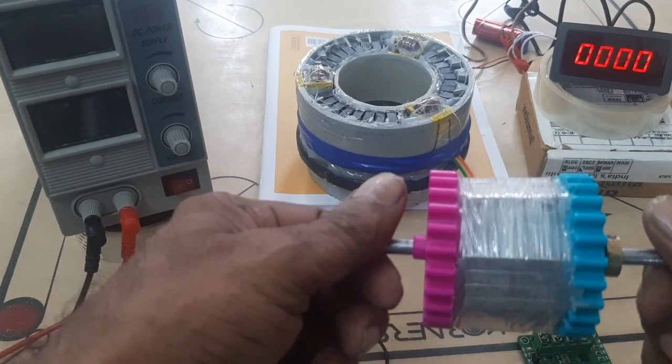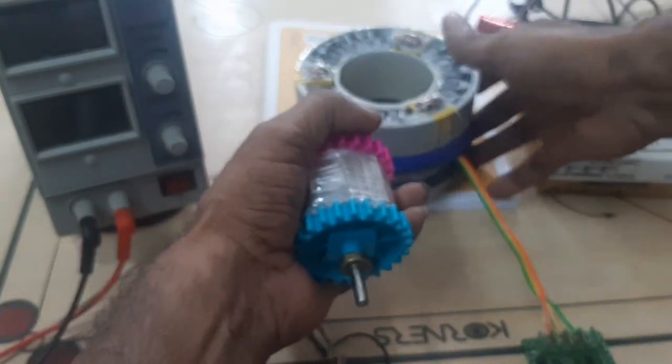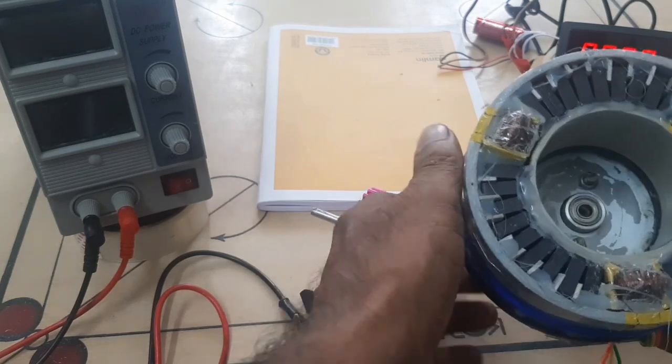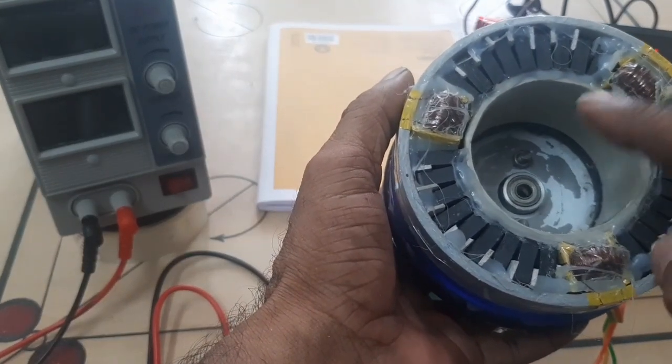Here, this is the 4 pole motor. Each pole has 4 magnets. Here, stator, 3 phase electromagnet is provided at 120 degrees.